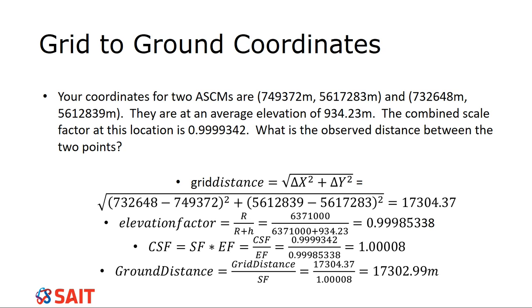The combined scale factor at this location is listed at 0.999934. That's my combined scale factor. I'm going to go down here. I've got to figure out the grid distance. I calculate the grid distance using my coordinates, which you guys know how to do using Pythagorean's theorem. We get the distance of 17,304.37 meters, 17 kilometers. I'm going to figure out the elevation factor from the numbers I've been given. I have my radius of the earth and the height that I was given and there's my elevation factor. So I have two things now. I have the elevation factor and I have the combined scale factor. I'm going to take my combined scale factor formula and I'm going to move it around so that I have the combined scale factor and the elevation factor on the same side.